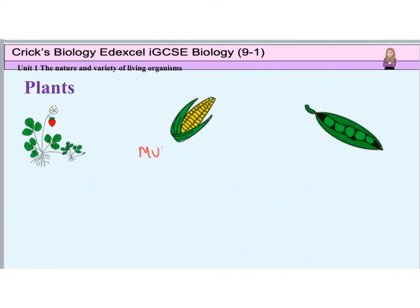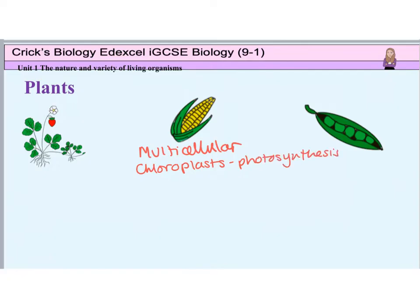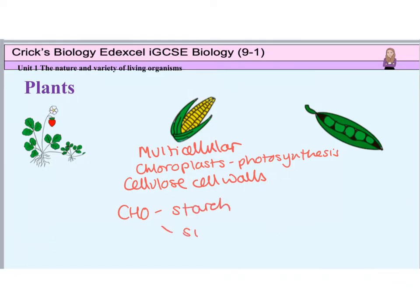Plants are also multicellular. Their cells contain chloroplasts, so they are able to carry out photosynthesis. The chloroplasts contain chlorophyll, which is a green pigment to absorb sunlight energy for photosynthesis. Their cells have cellulose cell walls for support and structure. They store their carbohydrates as starch, which is a complex carbohydrate, and also as sucrose, which is how it is transported in the phloem. Examples of plants include flowering plants that produce fruit, such as a strawberry plant; cereals, such as maize; and herbaceous legumes, such as peas or beans.